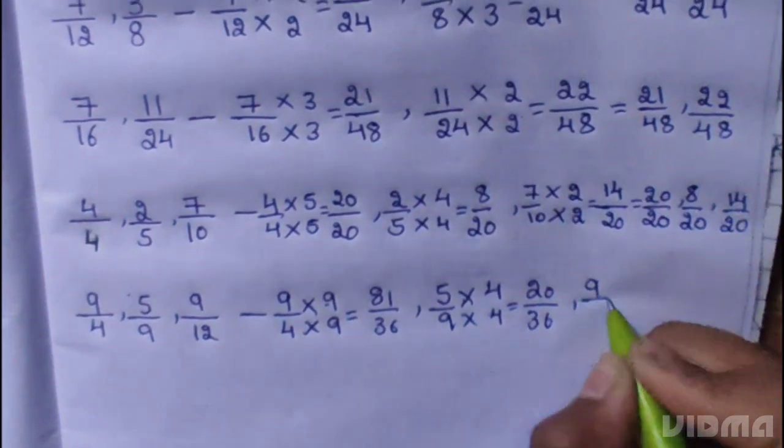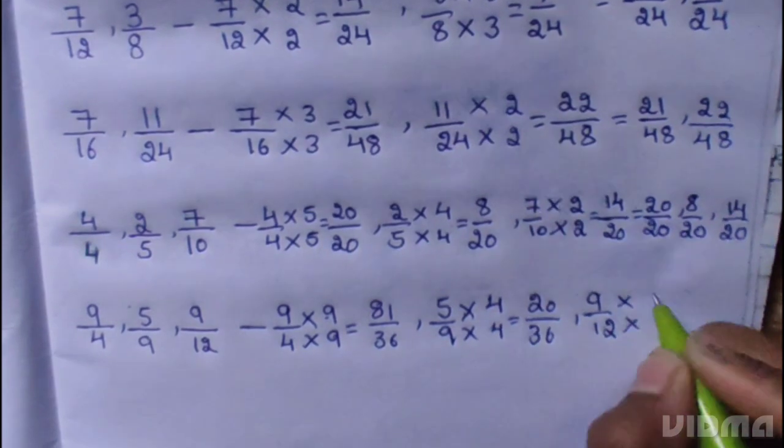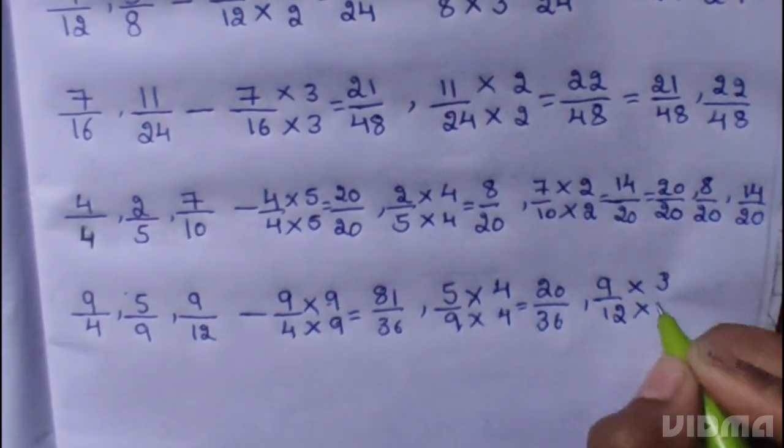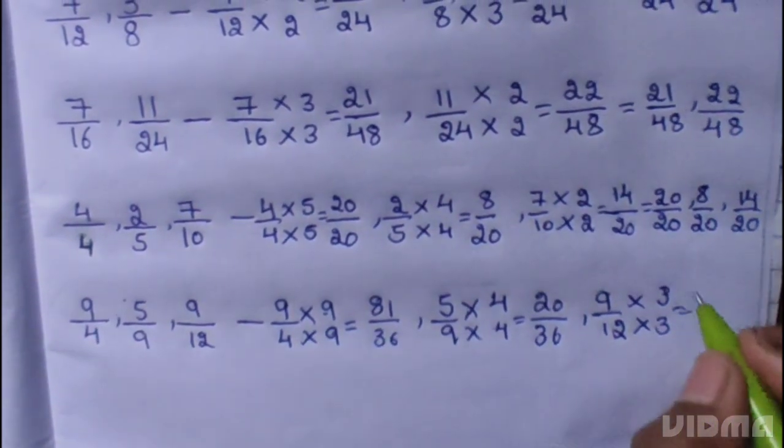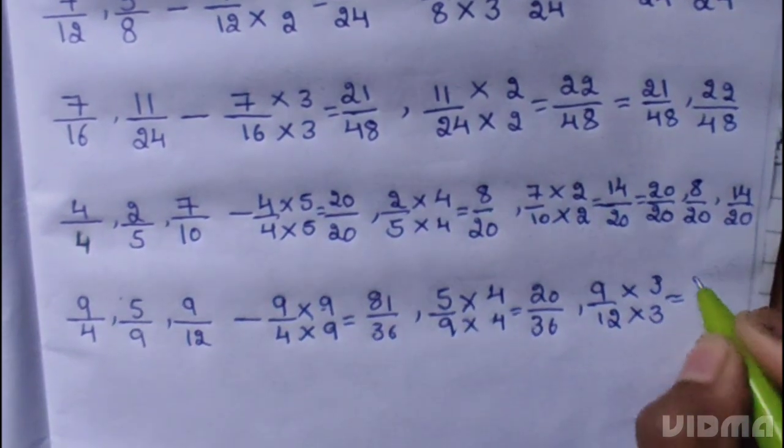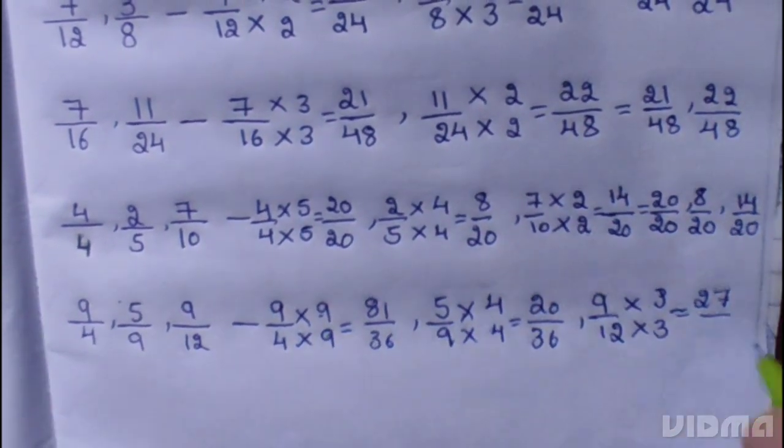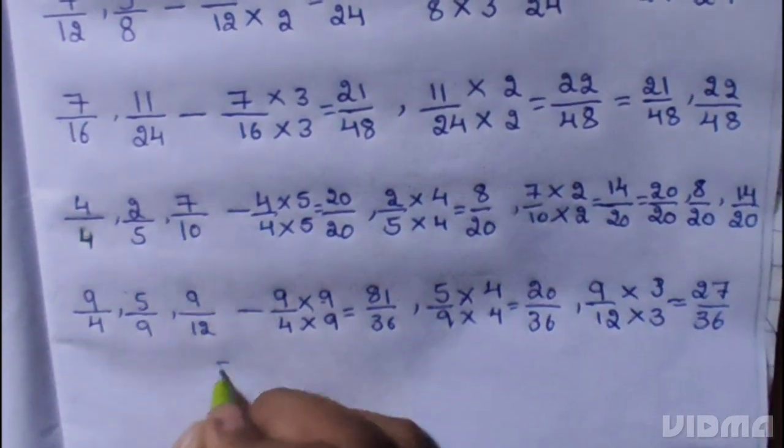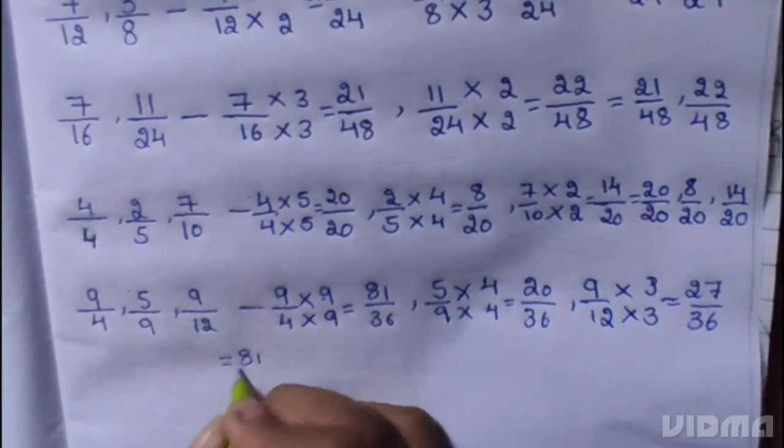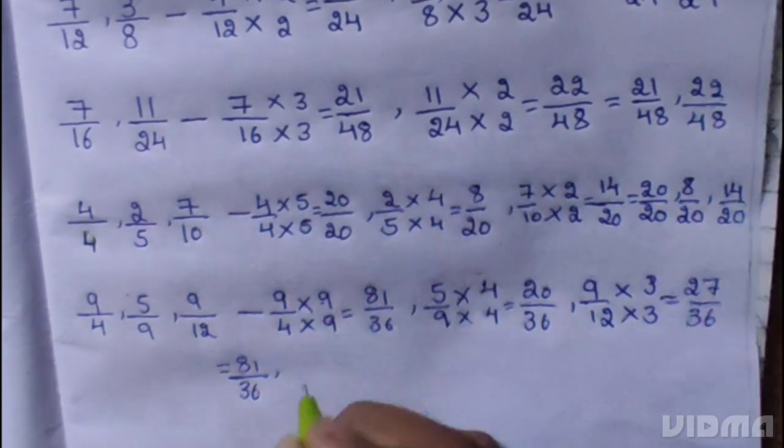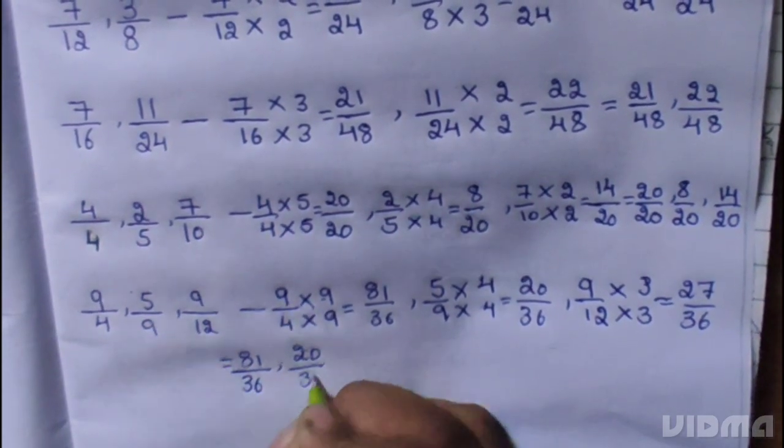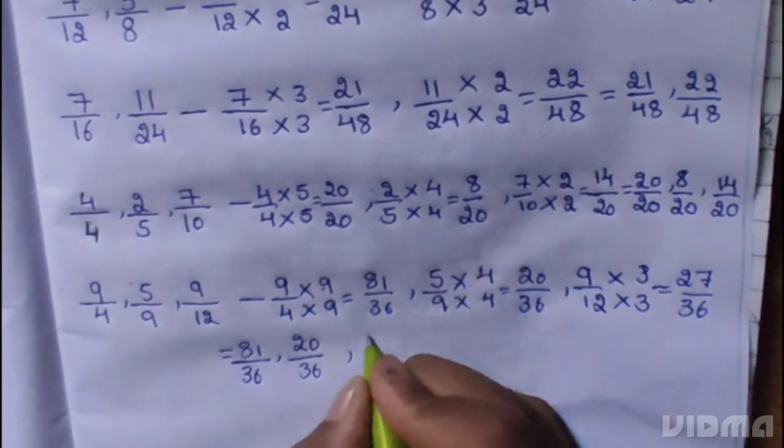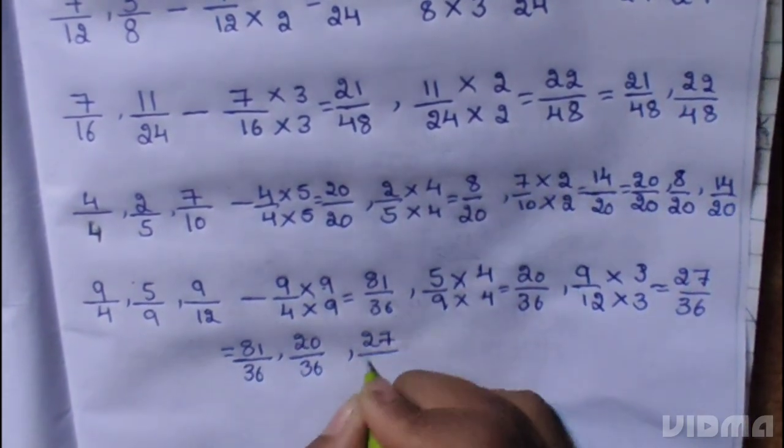9 by 12. 9 multiplied 3, 12 multiplied 3. 9 times 3 is 27, 12 times 3 is 36. Answer 81 by 36, 20 by 36, 27 by 36.